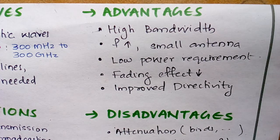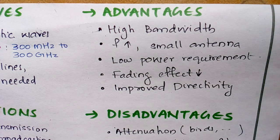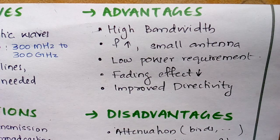The input power requirement is very low. Also, the fading effect is very low since microwaves travel via line-of-sight propagation. Moreover, as they have higher frequency, only small antennas are required. So to summarize the advantages: high bandwidth, high power, high gain, improved directivity, low input power requirement, low fading effect, and small antenna size.